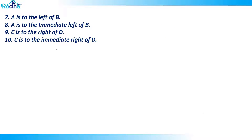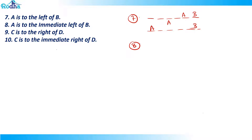Now, 'A is to the left of B' — if I mark this, A can be here, or here, or here — A can be anywhere to the left of B. That's the meaning of the seventh statement. But for the eighth statement, 'A is to the immediate left of B' — if B is here, A has to be immediately to its left, right here. Remember: your face is facing the screen, so this is your right and this is your left — don't get confused.